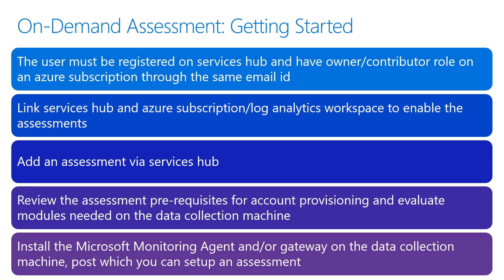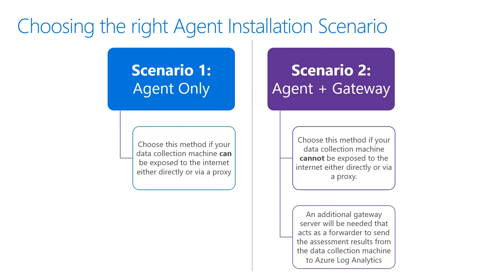There are two scenarios in choosing the right agent installation. In scenario one, agent only — choose this method if your data collection machine can be exposed to the internet either directly or via a proxy. In scenario two, agent and gateway — choose this method if your data collection machine cannot be exposed to the internet either directly or via a proxy.